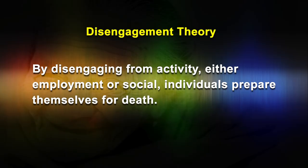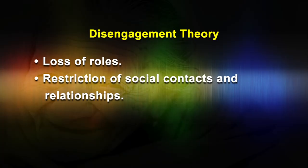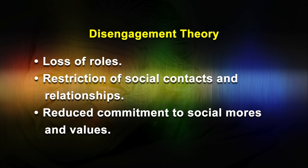By disengagement from activity, either employment or social, individuals prepare themselves for death. At the same time, society also prepares the individual for the latter phase of life, by withdrawing the pressure to interact and facilitating the entry of younger cohorts into the social world, so that disruption caused by death of the individual is minimized. Disengagement therefore implies a triple loss for the individual: loss of roles, restriction of social contacts and relationships, and reduced commitment to social norms and values.